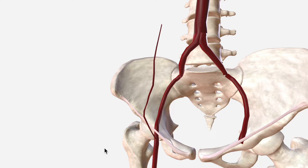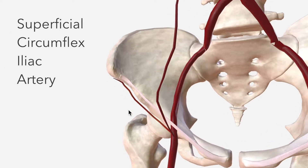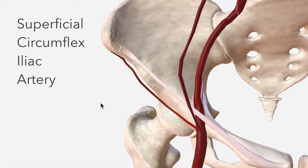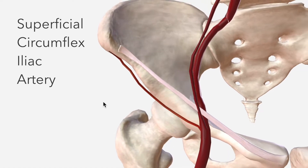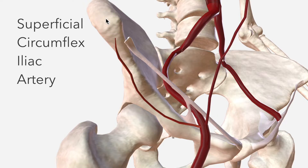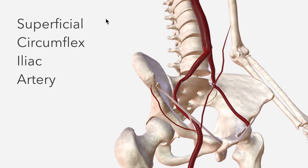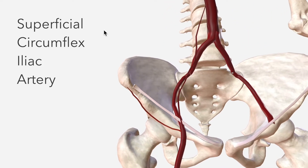Next we have the superficial circumflex iliac artery, which departs just opposite the superficial epigastric and then tracks toward the ASIS — the anterior superior iliac spine. It supplies the same structures as the superficial epigastric: skin, superficial fascia, and inguinal lymph nodes, but in a slightly different distribution.